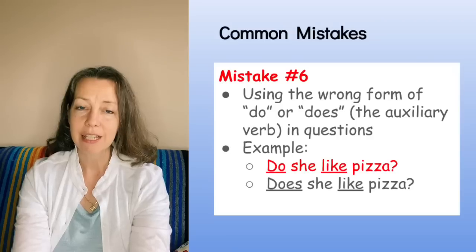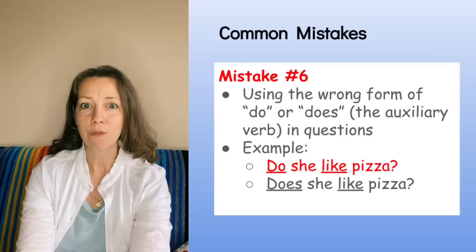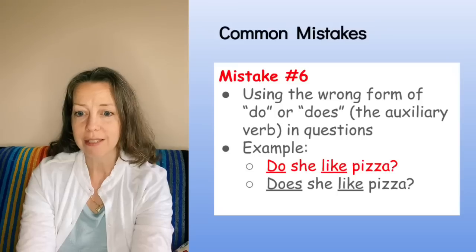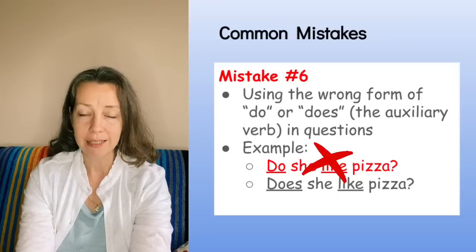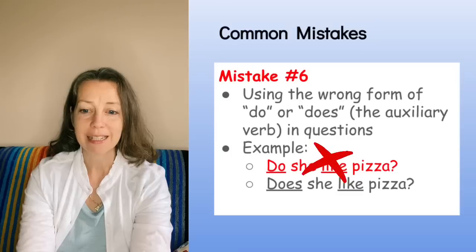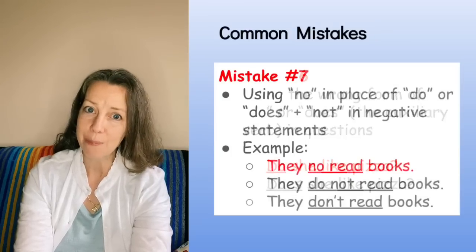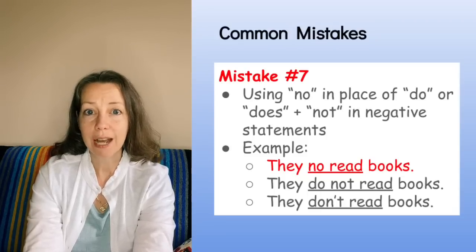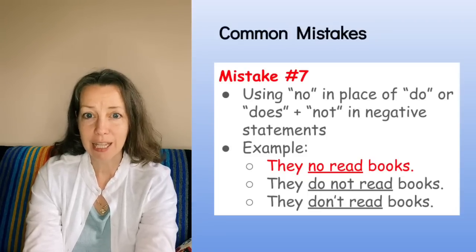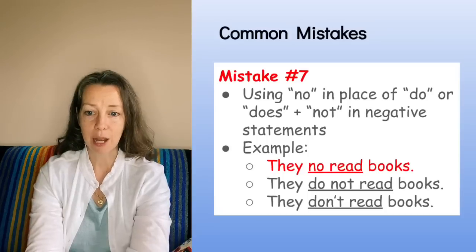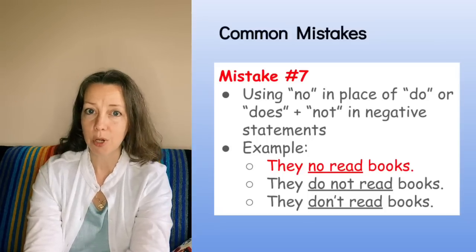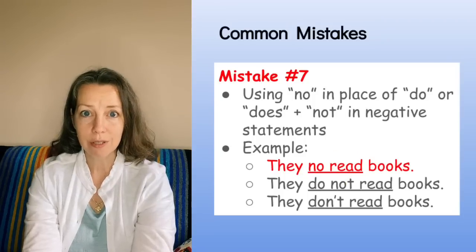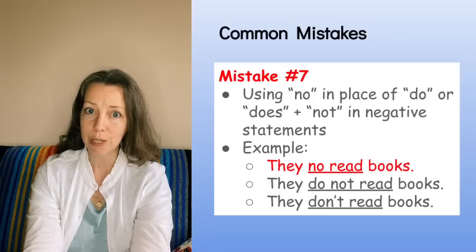Mistake number six is using the wrong form of 'do' or 'does' in questions. 'Do she like pizza?' is incorrect; 'Does she like pizza?' is correct. Mistake number seven is using 'no' in place of 'do not' or 'does not' in negative statements. For example, 'They no read books' is incorrect. The correct forms are 'They do not read books' or 'They don't read books.'